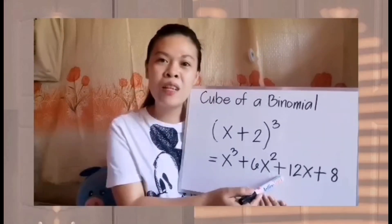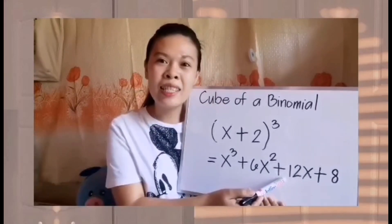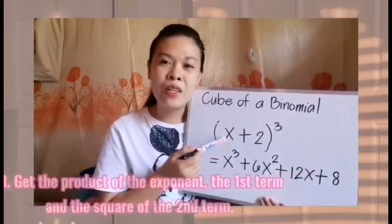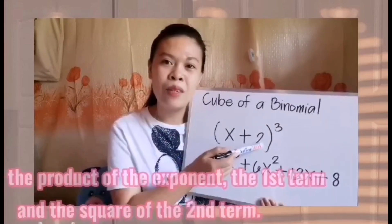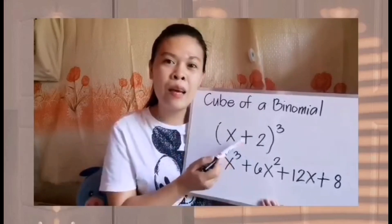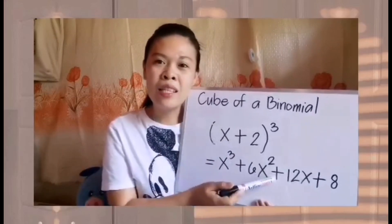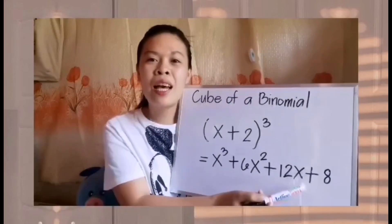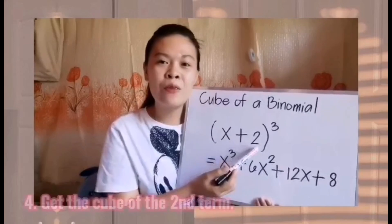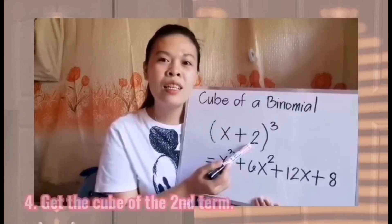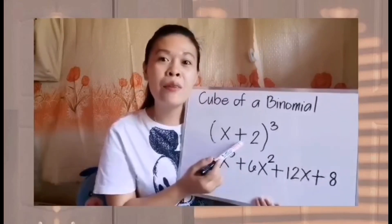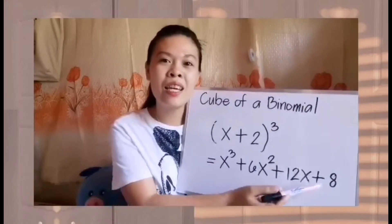Next, we have positive 12x. All we have to do is to get the product of the exponent, the first term, and the square of the second term. To do that, we will have 3 times positive x times positive 2 times positive 2, which equals positive 12x. Next, we will have positive 8. For the last step, we are just going to get the cube of the second term. So positive 2 times positive 2 times positive 2 equals positive 8.